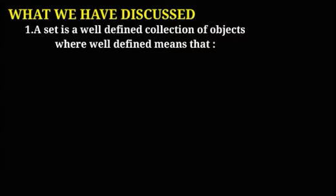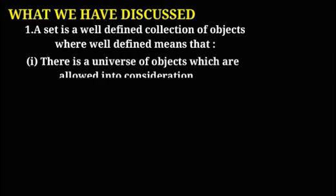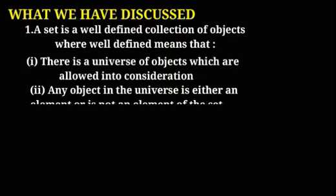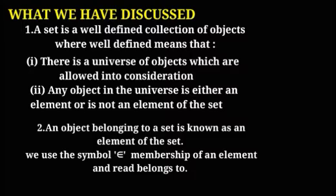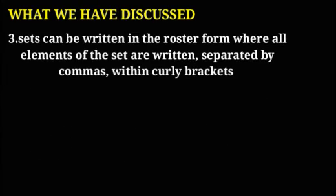To summarize what we have discussed: a set is a well-defined collection of objects, where well-defined means that there is a universe of objects under consideration. Any object in the universe is either an element or is not an element of the set. An object belonging to a set is known as an element of the set. We use the symbol ∈ to denote membership of an element, read as 'belongs to'. Sets can be written in roster form, where all elements are listed, separated by commas within curly brackets.